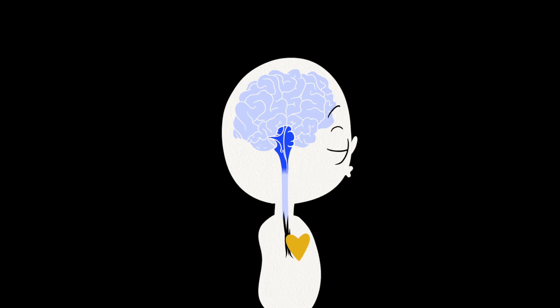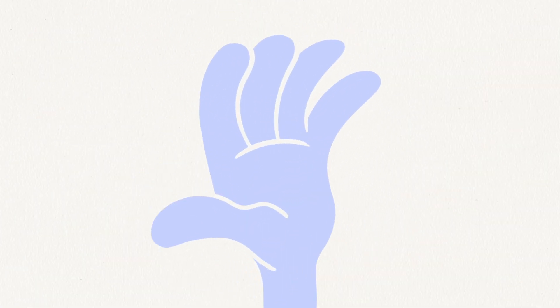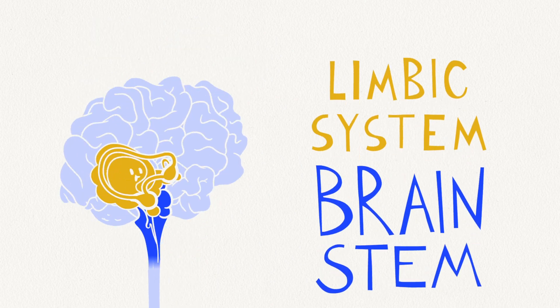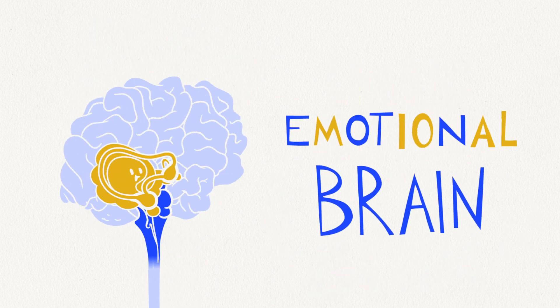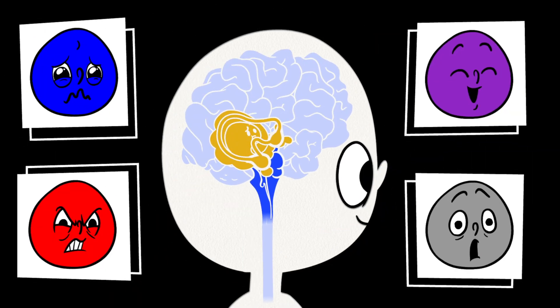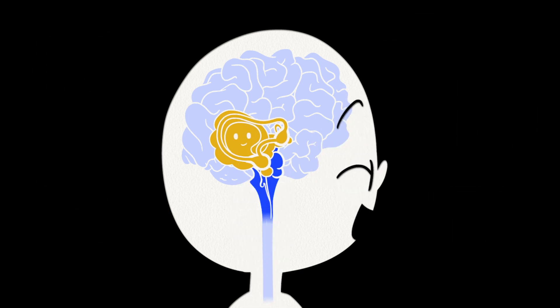Your thumb is your limbic system, and with your brain stem forms part of your emotional brain. This helps you to manage and understand your feelings and stress responses.